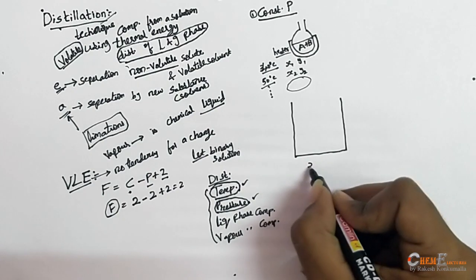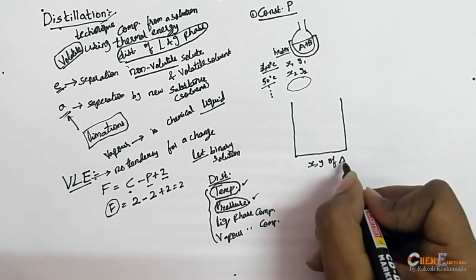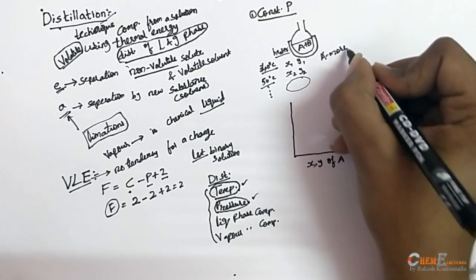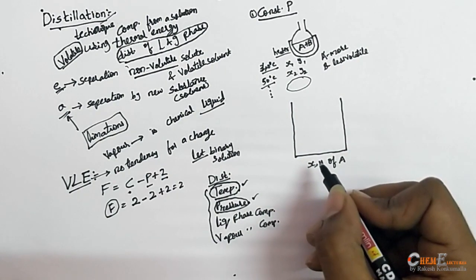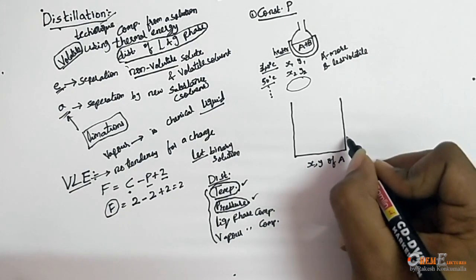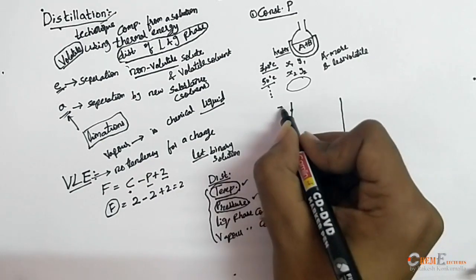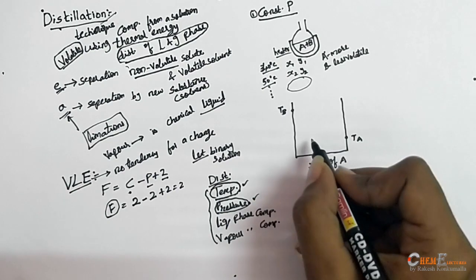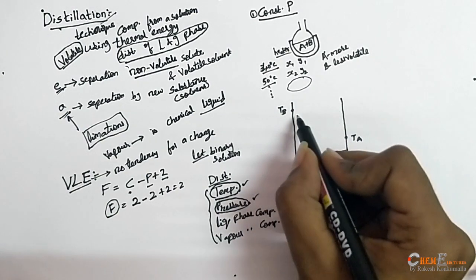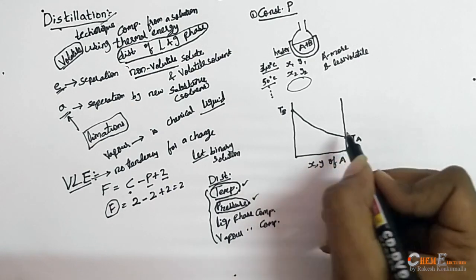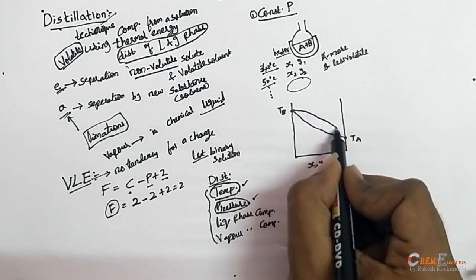From this data I draw a graph. On the x-axis I consider the composition of liquid and vapor of component A, where A is the more volatile component and B is the less volatile one. Since A is more volatile, its boiling point tA is less than the boiling point tB of B. Plotting temperature versus liquid phase composition gives one curve, and temperature versus vapor phase composition gives another curve.